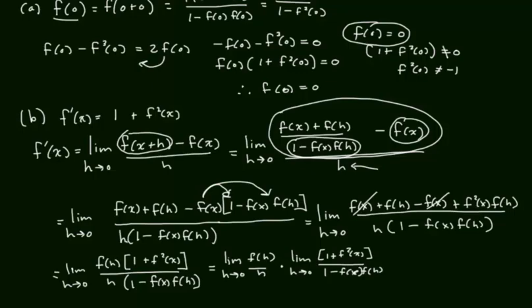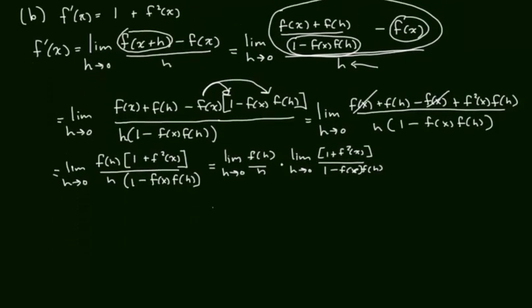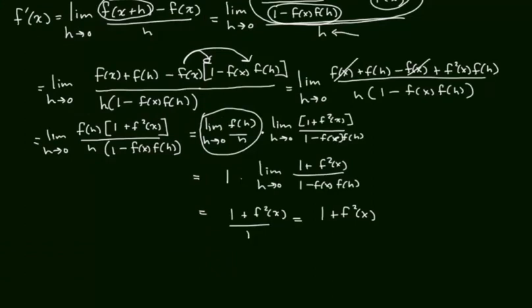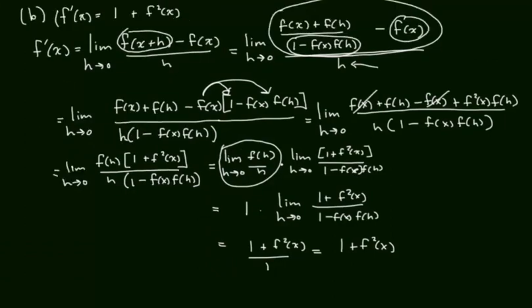So, the limit as h goes to 0, f of h over h times the limit as h goes to 0 of 1 plus f squared x, like that, over 1 minus f of x, f of h, like that. Then, let's see if I can scoot down here a little bit. Then, by property number 3, this quantity here is equal to 1. So, I'll write it so that I can clearly see the property being used, like that. 1 minus f of x, f of h. And then, in our final property, we know the limit as h goes to 0 of f of h is equal to 0, which is going to lead us to 1 plus f squared x over 1, which equals 1 plus f of x squared, which is what we wanted to prove in the very beginning.